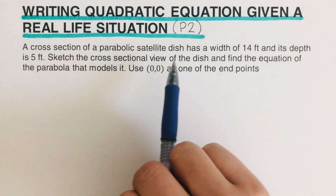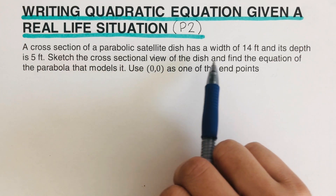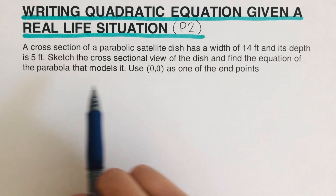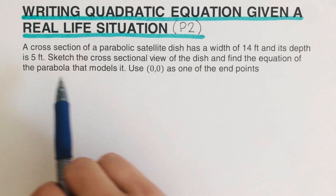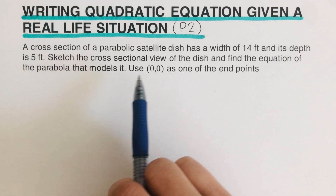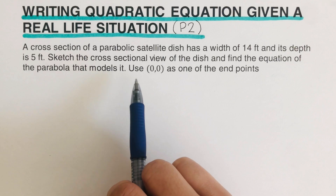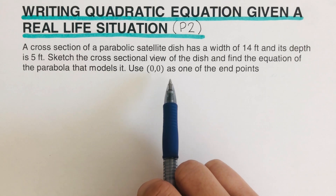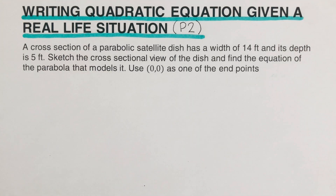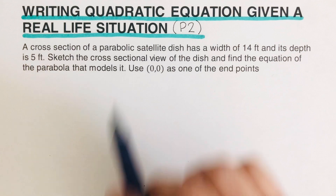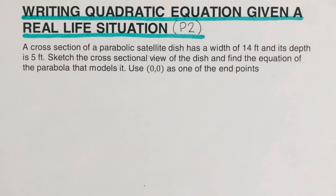Let's take this first example: a cross-section of a parabolic satellite dish has a width of 14 feet and its depth is 5 feet. Sketch the cross-sectional view of the dish and find the equation of the parabola that models it. Use (0, 0) as one of the endpoints. Parabolic satellite dishes open upward.